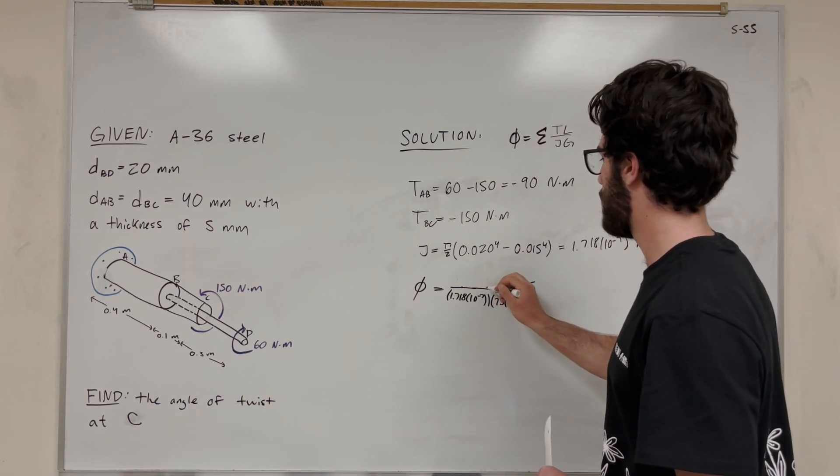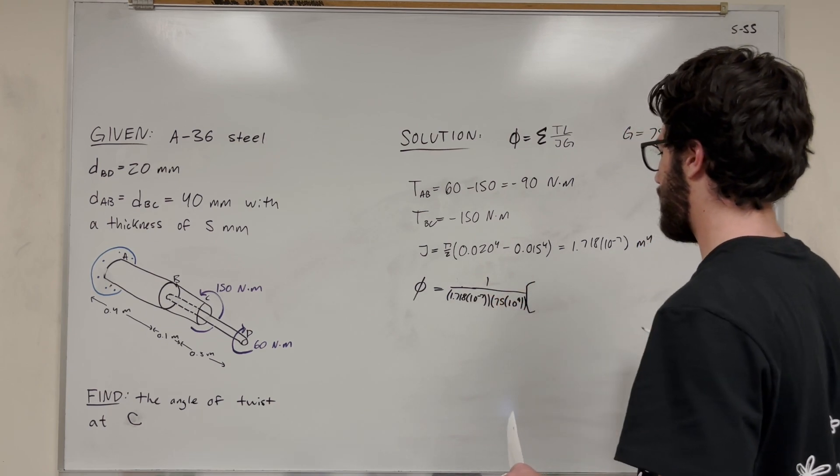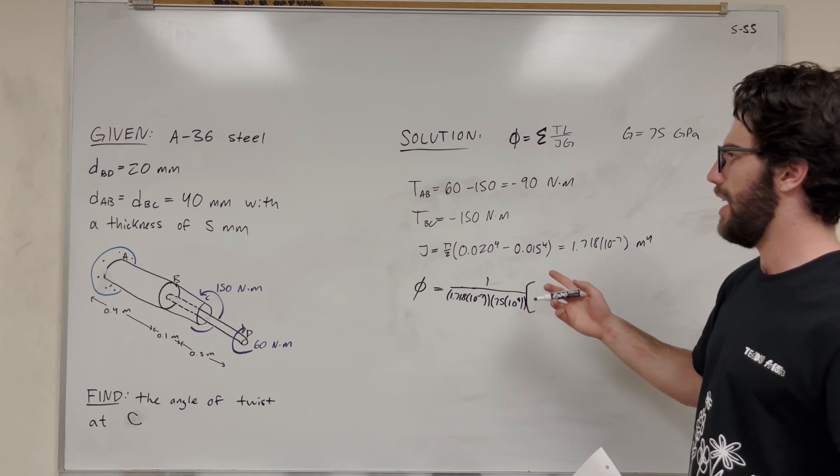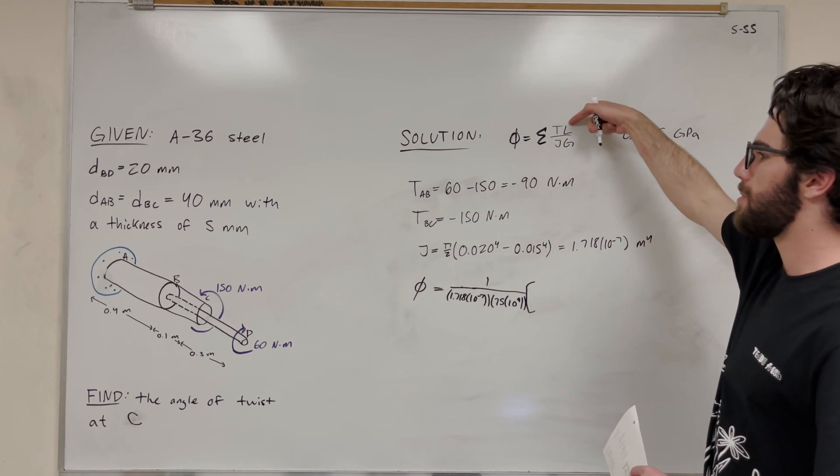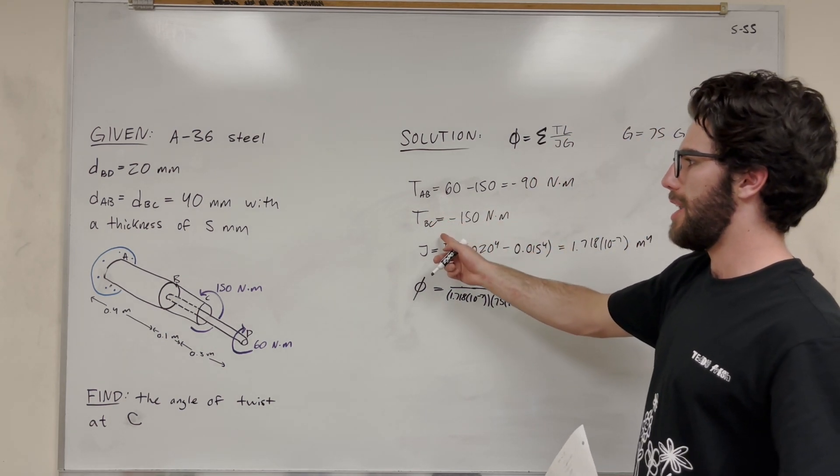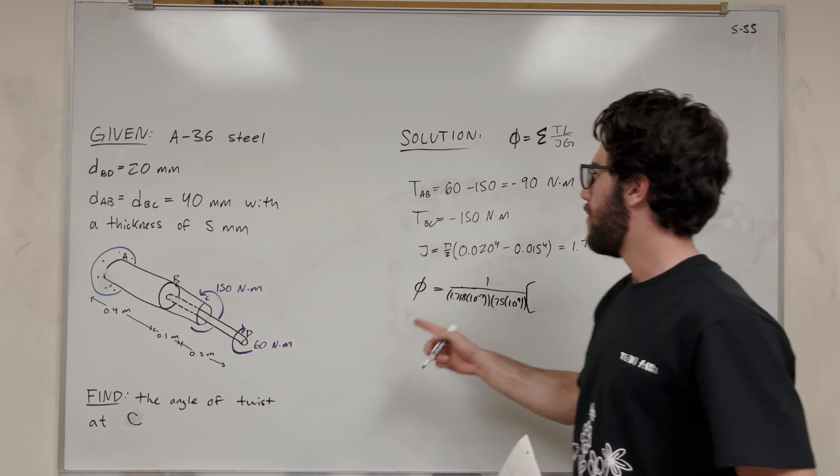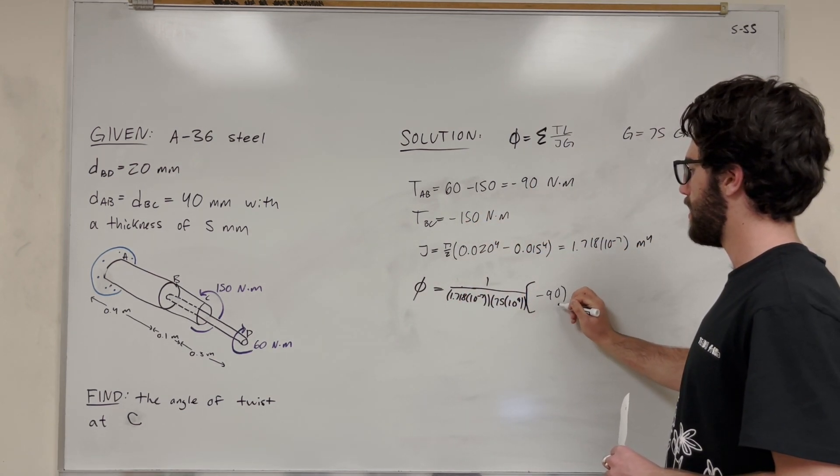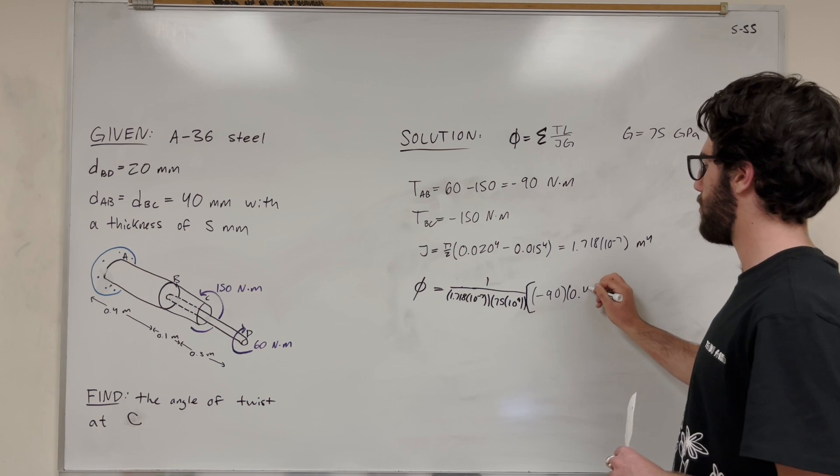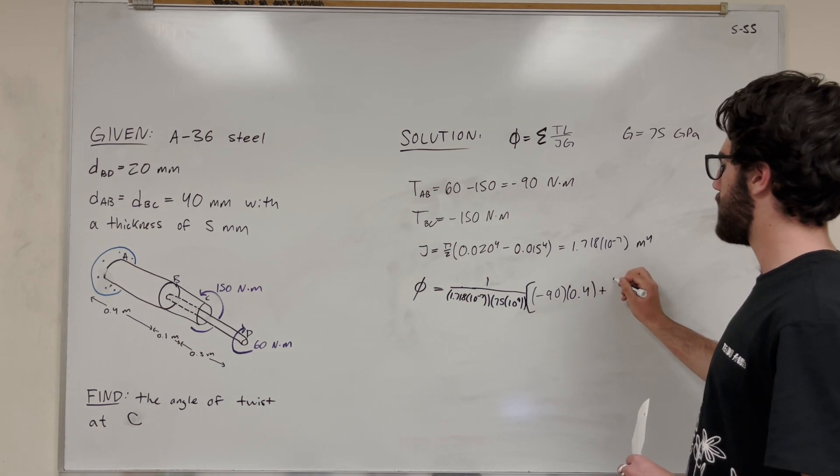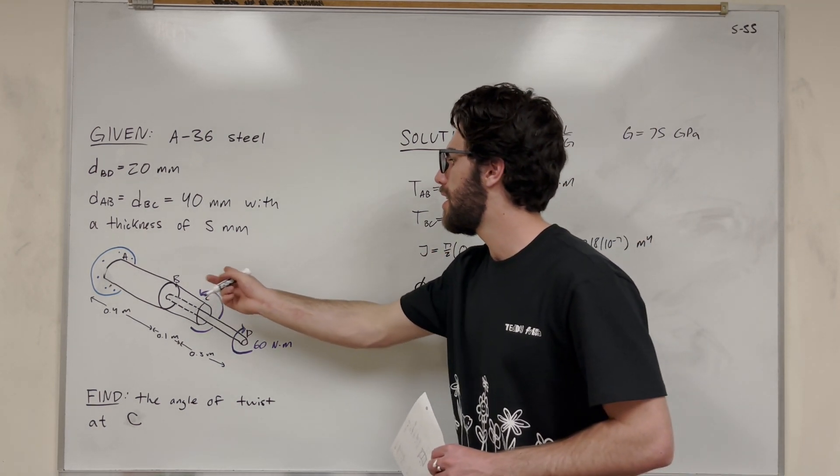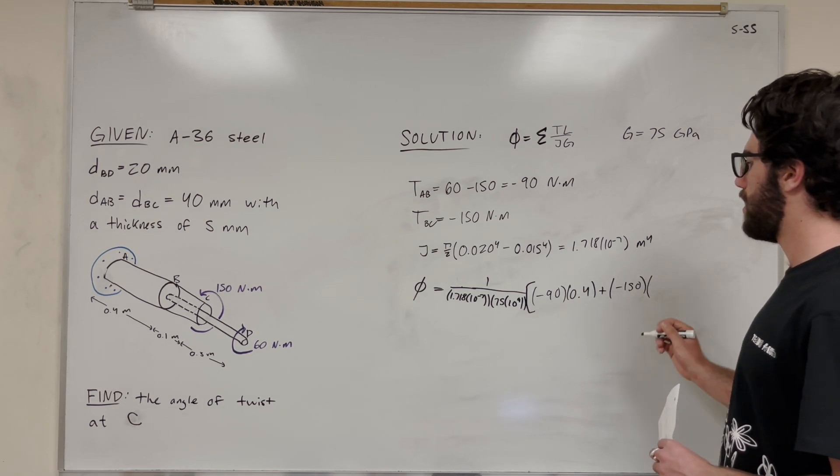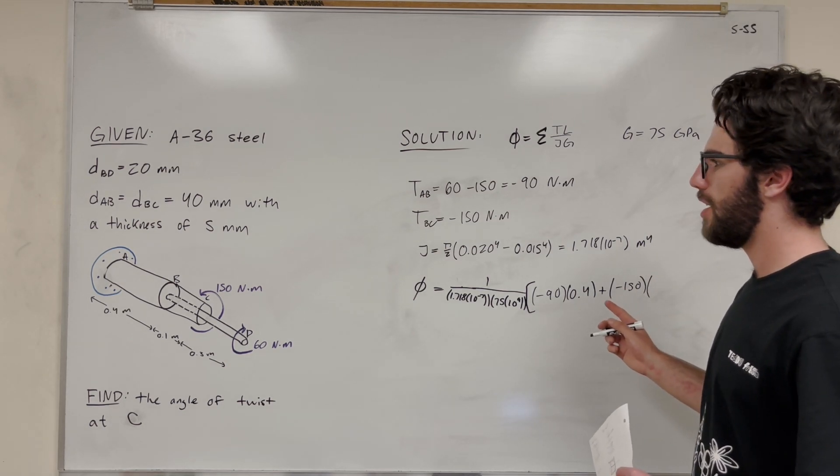I know my equation is going sideways, sorry I can't handle it. So then we have to sum up the top, which is torque times length. We know that we're doing AB and BC, so let's start with AB. We know that its torque is negative 90 and its length is 0.4 meters. Then we're going to add it to the next one. BC has a torque of negative 150 and a length of 0.1 meters.